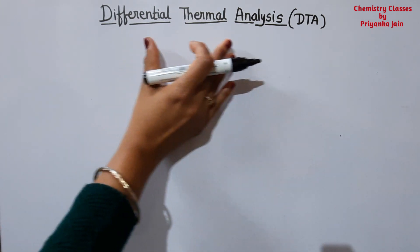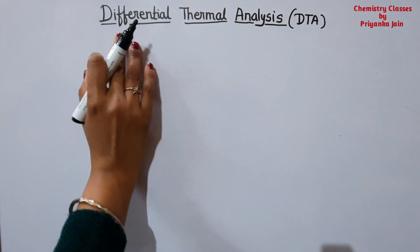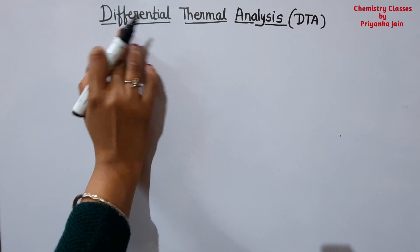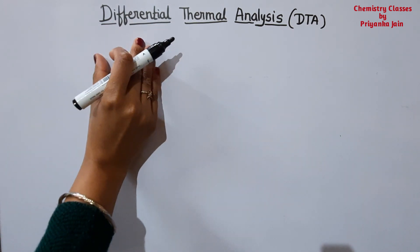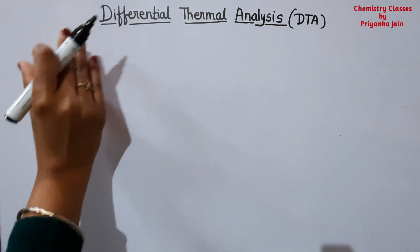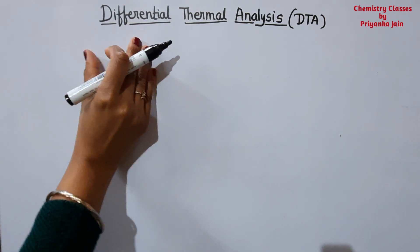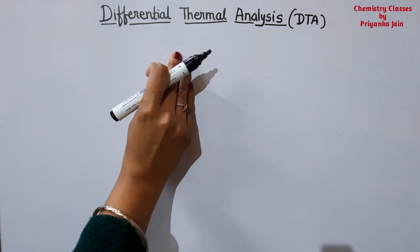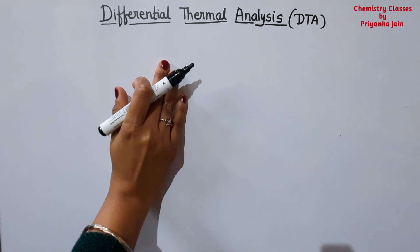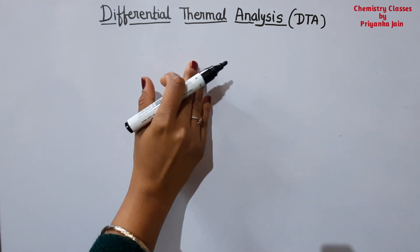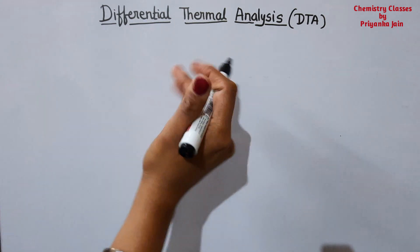Firstly we are starting with differential thermal analysis, that is called DTA. From the name you can see this is 'differential' — it means we have to study the sample in a differential way, that is, with respect to a reference compound. So here we are taking one sample and another one is the inert reference compound.